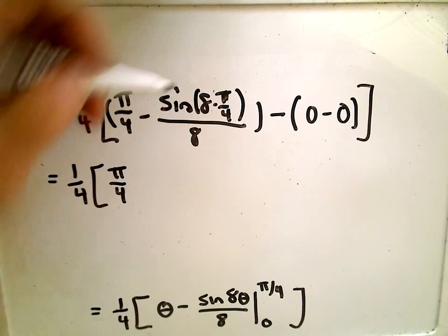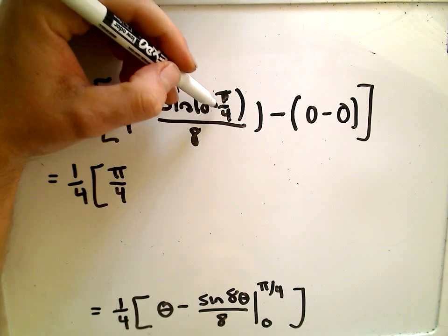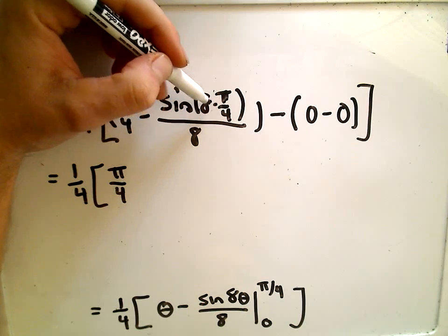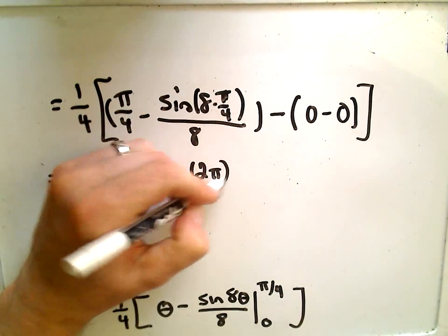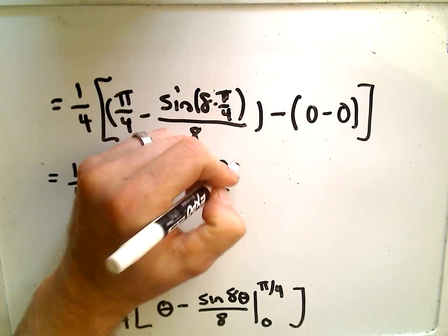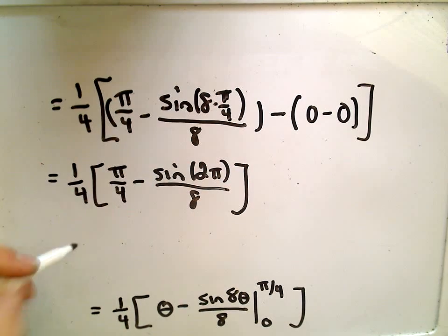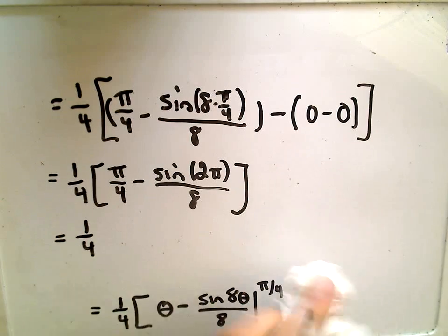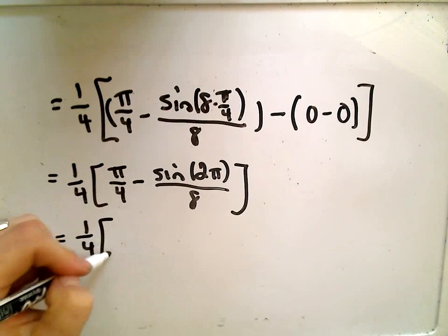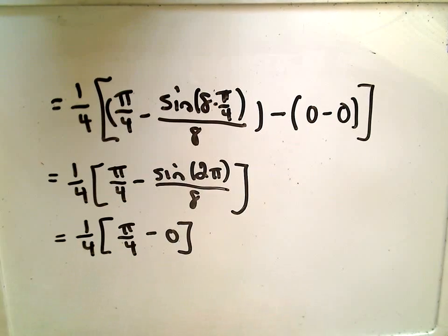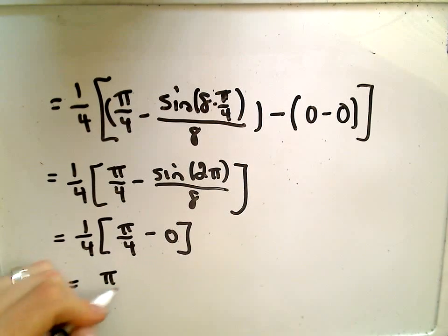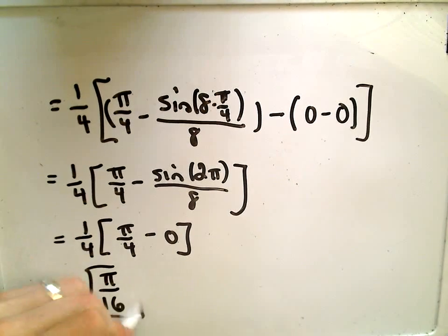We're almost there. Pi over four is just chilling. Notice eight pi over four is two pi. So we get sine of two pi divided by eight. But likewise, sine of two pi is just equal to zero. So if we multiply, it looks to me like we get the value pi over 16.